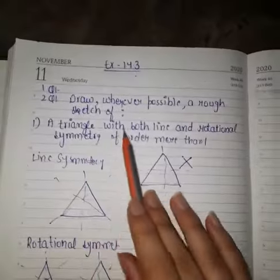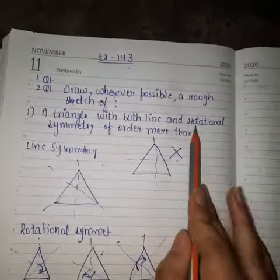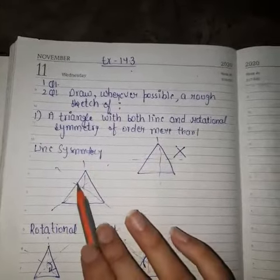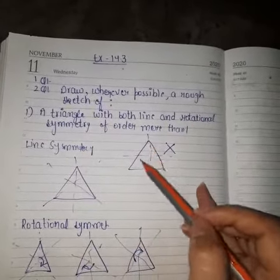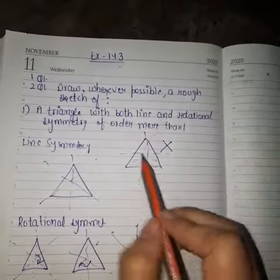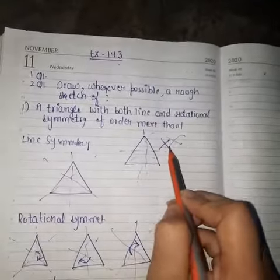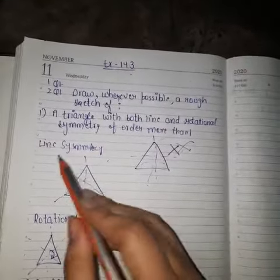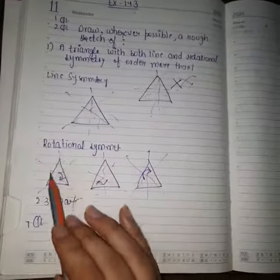Part one: a triangle with both line symmetry and rotational symmetry of order more than one. If we apply line symmetry to the triangle, we cut it straight from the corner. The triangle has rotational symmetry of order more than one as well.